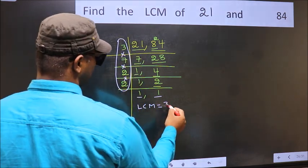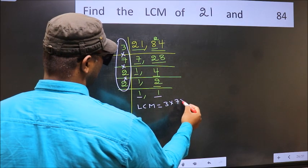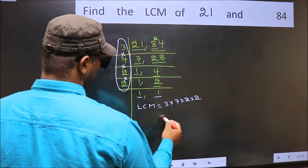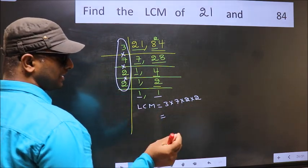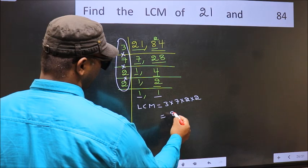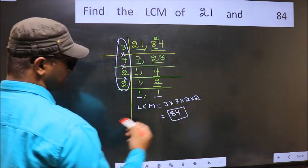That is 3 into 7 into 2 into 2. When we multiply these numbers, we get 84 is our LCM.